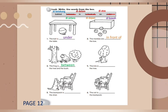Number four: the kite is blank the tree. Take a look at the picture — where is the kite? The kite is behind the tree. Layangan tersebut berada di belakang pohon itu. Number five: the backpack is blank the chair. Where is the backpack? The backpack is on the chair. Ransel tersebut berada di atas kursi tersebut. Number six: the cat is blank the backpack. Where is the cat? The cat is in the backpack. Kucing tersebut berada di dalam ransel.